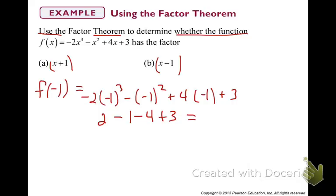What are we looking for? What are we needing? Zero. Are we going to get a zero? Yes. 2 minus 1 would be 1. 1 minus 4 would be negative 3. Negative 3 plus 3 would be 0. So what did you just find? You found that in fact, the x plus 1 is a factor.